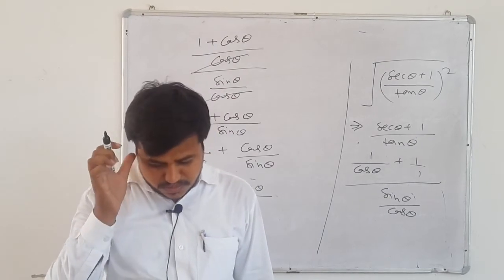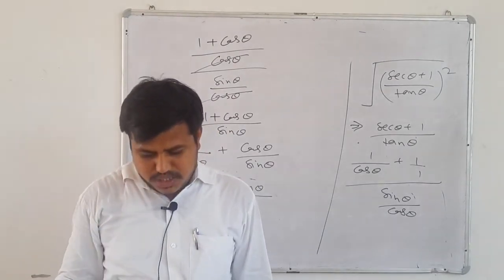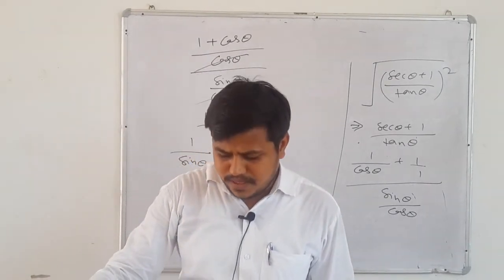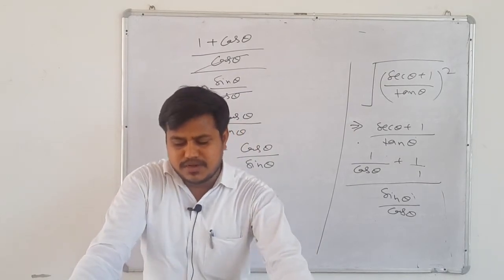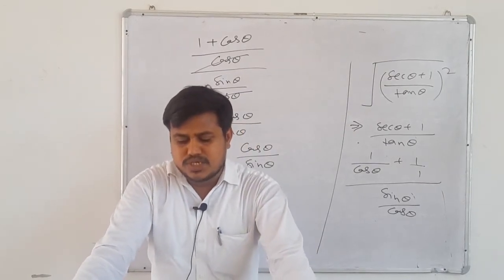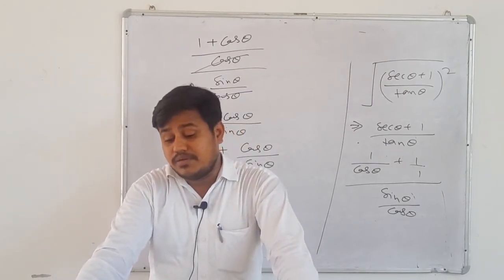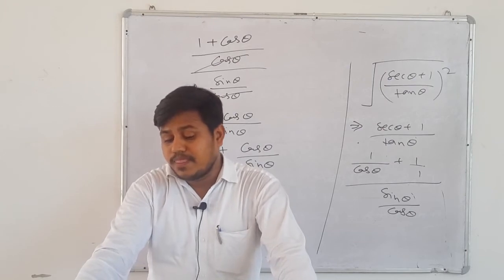Easy question. Question 24: first change to sin/cos, then apply the algebraic identity for a³ - b³.